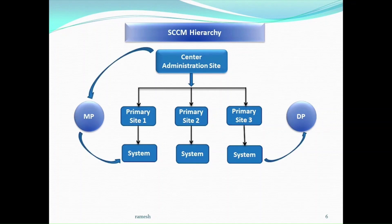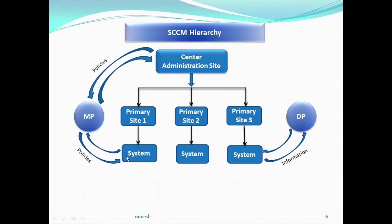From top level to low level — top level is the CAS, Central Administration Site; low level is the systems. The files are transferring from top level to low level. It is a mediator between the top level and the low level. The Central Administration Site sends the files to the systems. The distribution point stores the information, then the system sends the status to the management point, which sends it to the top level — the Central Administration Site.